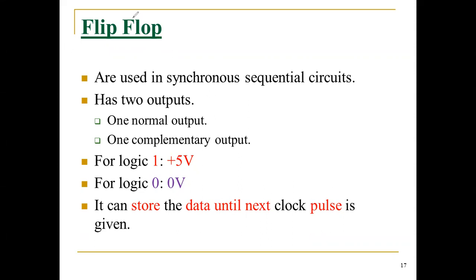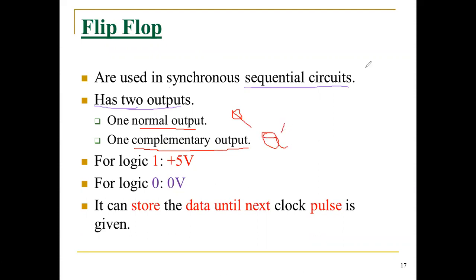Similar to latches, flip-flops have inputs and outputs — two inputs and two outputs, along with an enable signal. Flip-flops are mainly used in synchronous and asynchronous sequential circuits. They have two outputs: one is a normal output and another one is the complementary output — that means Q and Q-bar, sometimes called Q and Q(n+1).